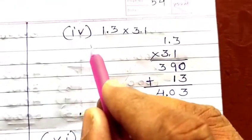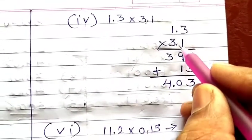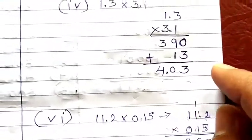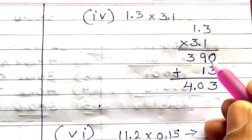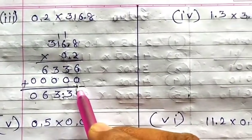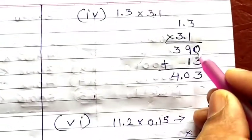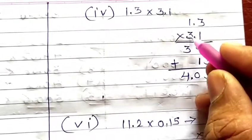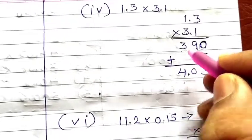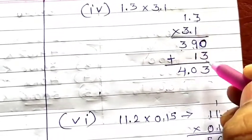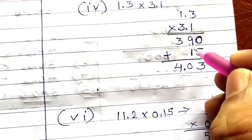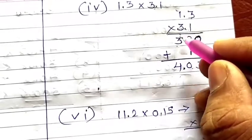Then 1.3 into 3.1. We will multiply using the column method. Place one zero by default. Multiply 3 by 3 to get 9, and 3 by 1 to get 3. In the next row multiply 1 by 3 to get 3, and 1 by 1 to get 1. Add: 0 plus 3 is 3; 9 plus 1 is 10 with carry 1; 3 plus 1 is 4. After the decimal: one digit each, so 1 plus 1 equals 2. Leave 2 digits from the last — answer is 4.03.